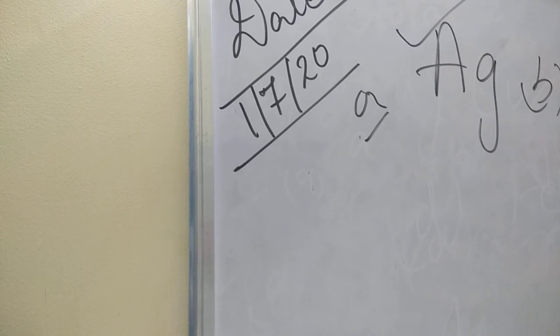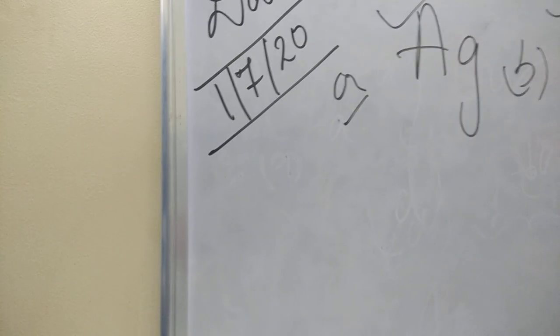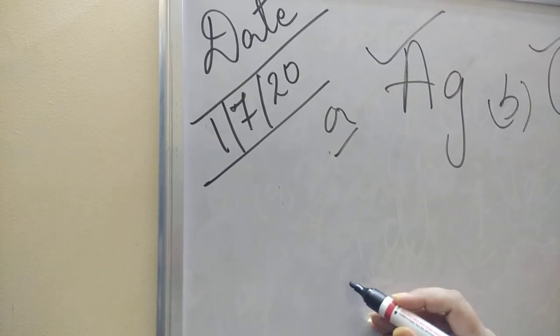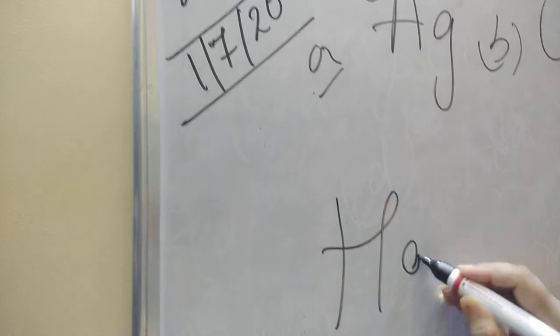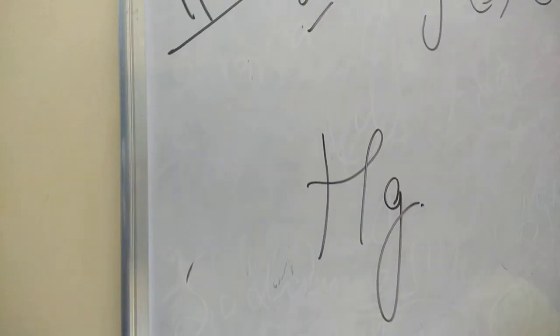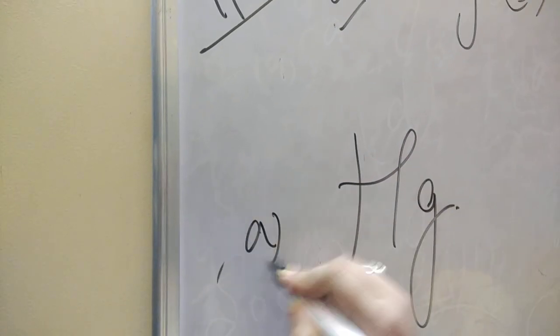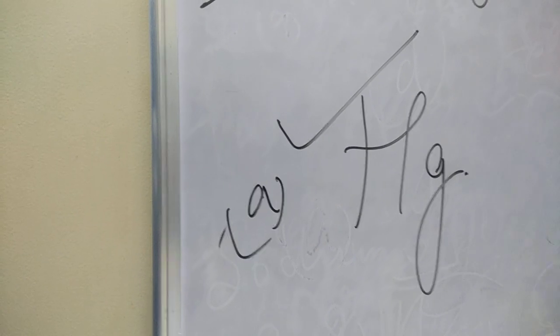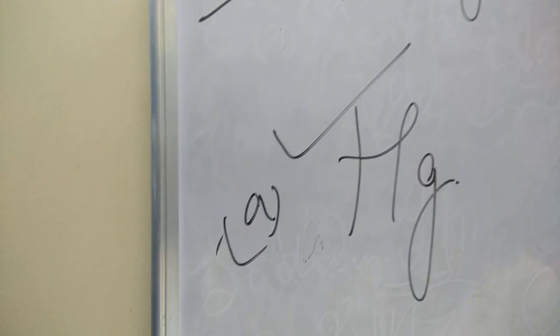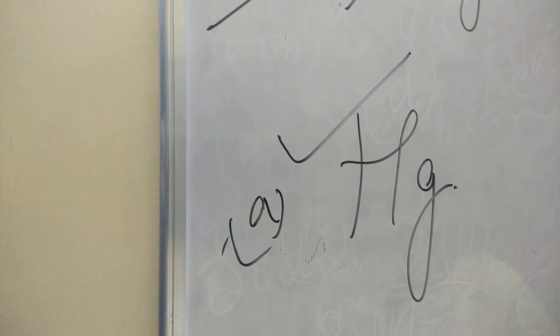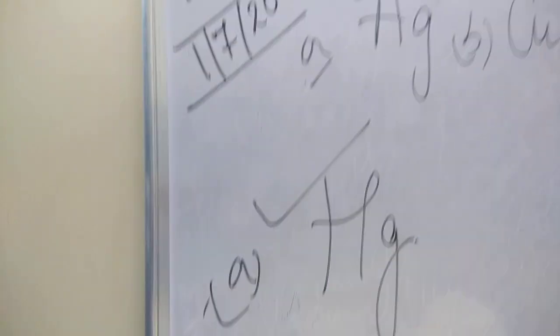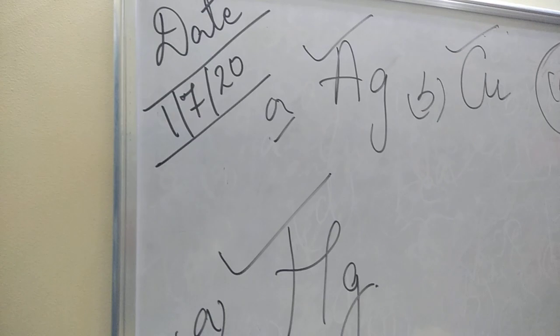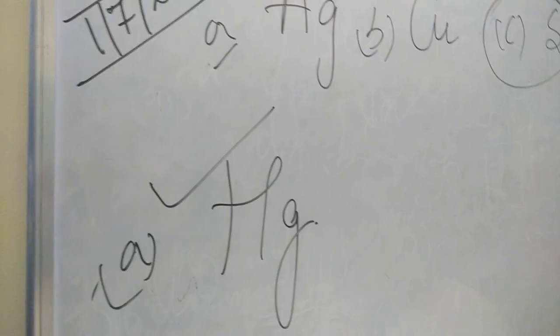Question 4: Metals are generally solid — which of the following metals is in liquid form? This is a very easy exceptional case which I have already taught you. The answer is Mercury, symbol Hg. The rest — silver, aluminium, and sodium — all exist in the solid state.